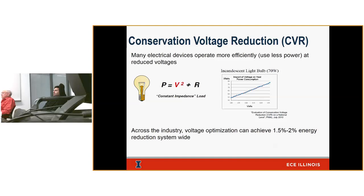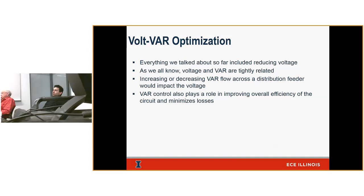Across the country, utilities that have piloted voltage optimization have seen anywhere from 1.5 to 2 percent energy reduction across their system. Everything discussed so far was about reducing the voltage. We didn't talk much about VARs — VAR is also a big component of conservation voltage reduction or voltage optimization. That's why we started naming it Volt-VAR optimization: you're optimizing the voltage and the VARs to deliver maximum results to your system and customers. VAR control plays a big role in improving power factor, minimizing losses, and helping capacity across the distribution feeder.